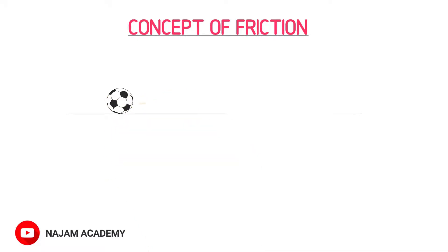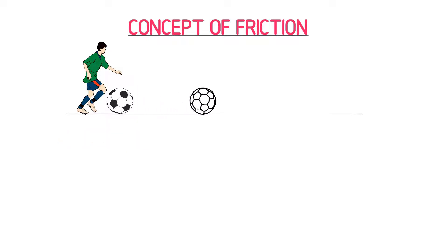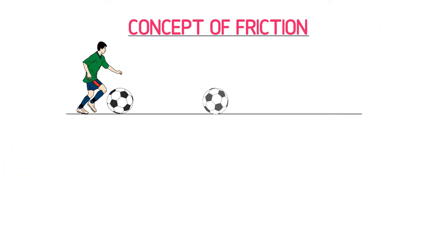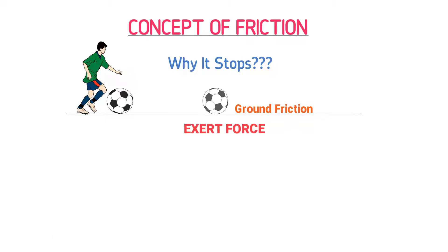Now, let me teach you the concept of friction. Consider a football on the surface of the earth. When you kick this football, you exert force on it. As a result, the football starts moving. After covering some distance, it stops. We have learned that it is force that stops moving objects, but here there is no one stopping this football. So, why does it stop? The answer is simple: it is the earth friction or ground friction that exerts force on this football and stops it.